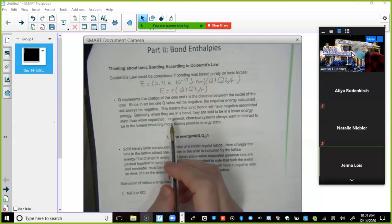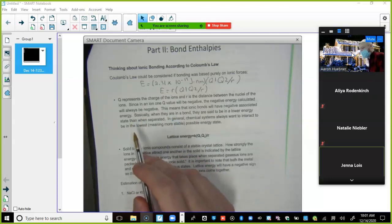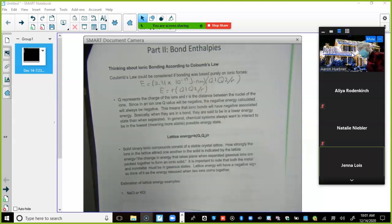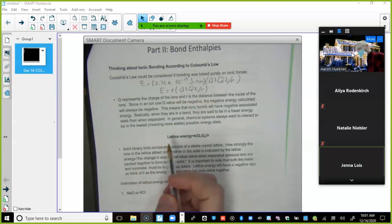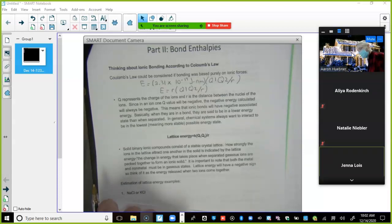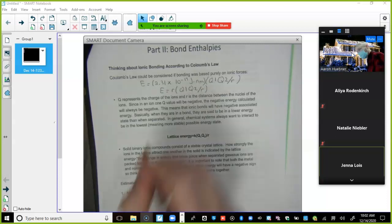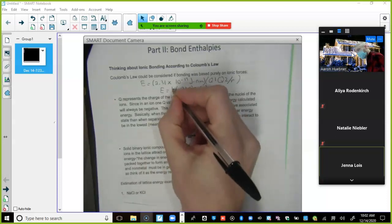This means that the ionic bonds will have negative associated energy. Basically, when they are in a bond, they're said to be in a lower energy state than when separated. In general, chemical systems always want to interact to be in the lowest, meaning more stable possible, energy state.